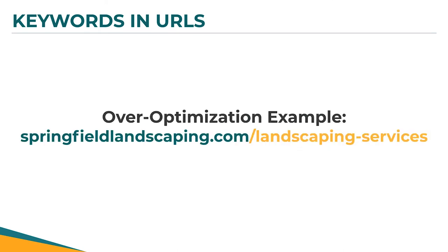The thing to also consider with an exact match domain like 'springfield-landscaping.com' is that it's hard to avoid using the same keyword in your page URLs. Their landscaping page would be difficult to leave the word 'landscaping' out of. We run into websites with domains like this all the time — we're not going to tell them to scrap everything. Having the same word in your URL is not necessarily going to break you; try to avoid it, but sometimes you simply can't.